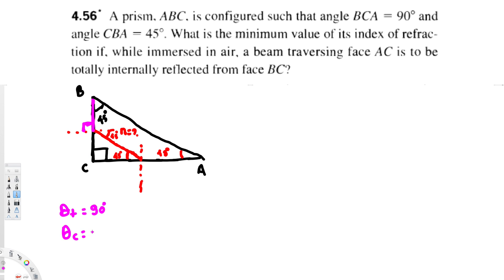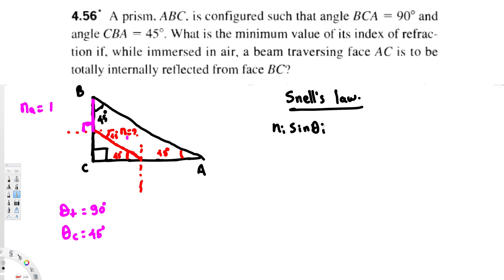Now we have the critical angle as 45 degrees and the index of refraction of air is 1. With this information, we can use Snell's law to find the index of refraction of the prism. Snell's law states: n_incident × sin(θ_incident) = n_transmitted × sin(θ_transmitted). The light is going from prism to air, so n_transmitted is the index of air, n_a, and sin(θ_transmitted) = sin(90°) = 1.